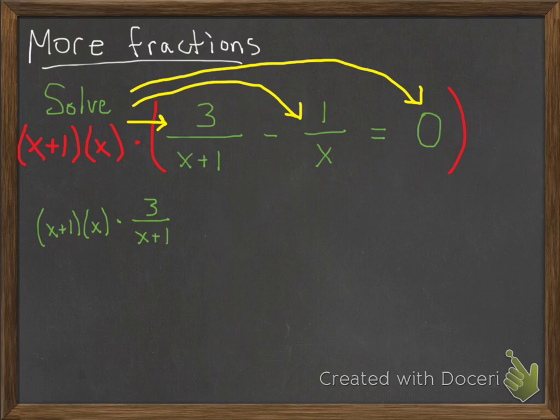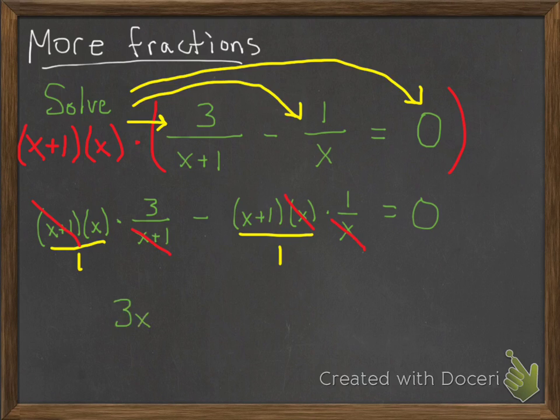So I'm going to write out what this looks like when you multiply by the denominators. It's called the LCD, the least common denominator. Now we have fractions multiplied by things that aren't fractions. But things that aren't fractions really are fractions. They're just divided by 1. So you can cancel out some stuff, simplify, and then solve.